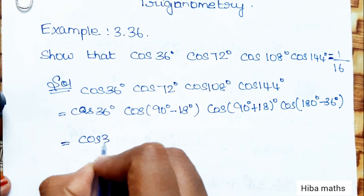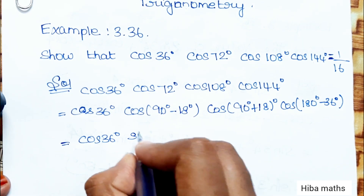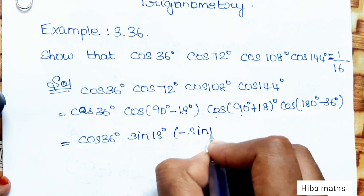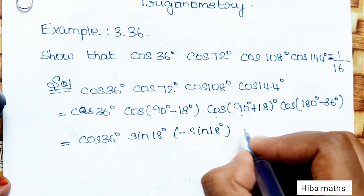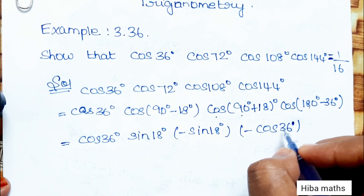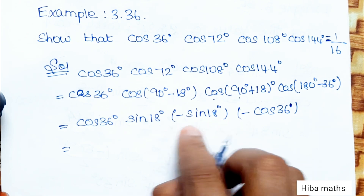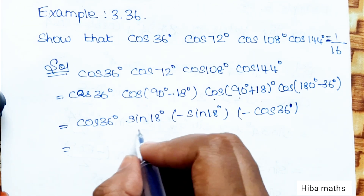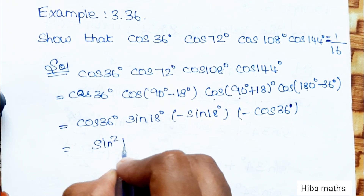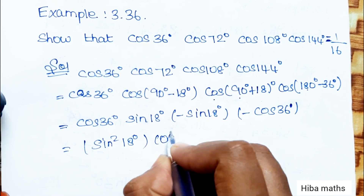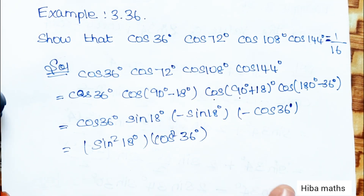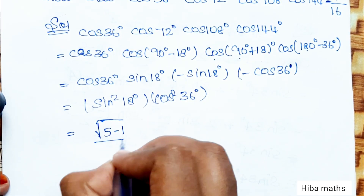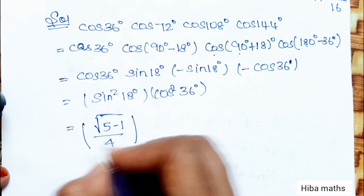Using the identities: cos(90° - θ) = sin θ, cos(90° + θ) = -sin θ, and cos(180° - θ) = -cos θ, the product simplifies. The two negative signs cancel, giving us sin 18° · sin 18° · cos 36° · cos 36°, which is sin²18° · cos²36°.